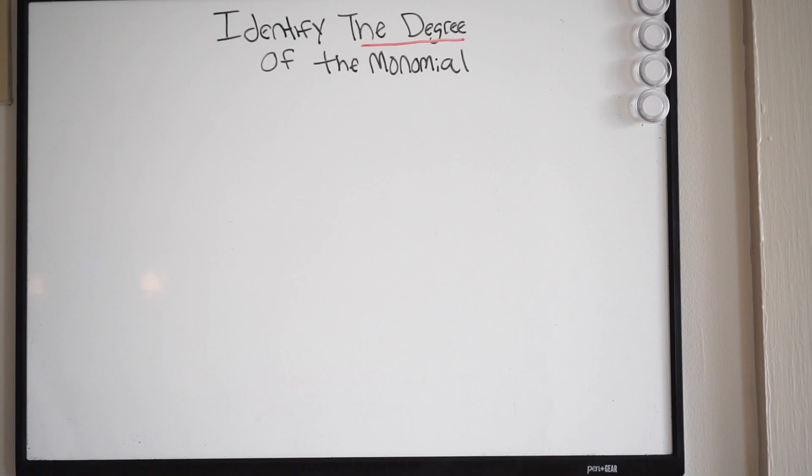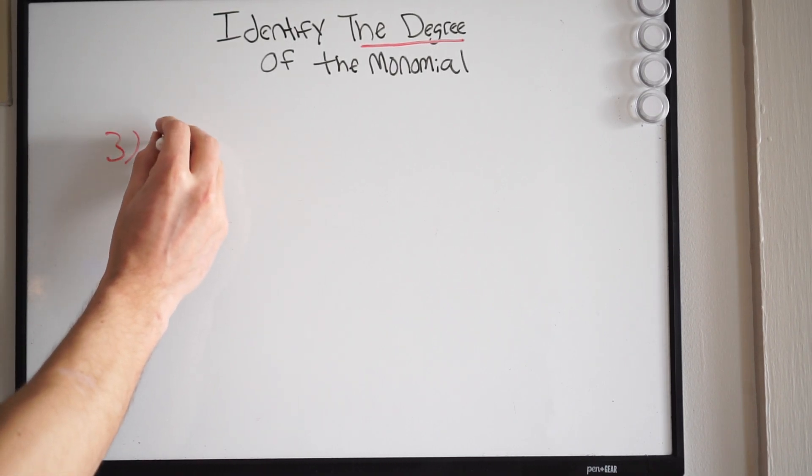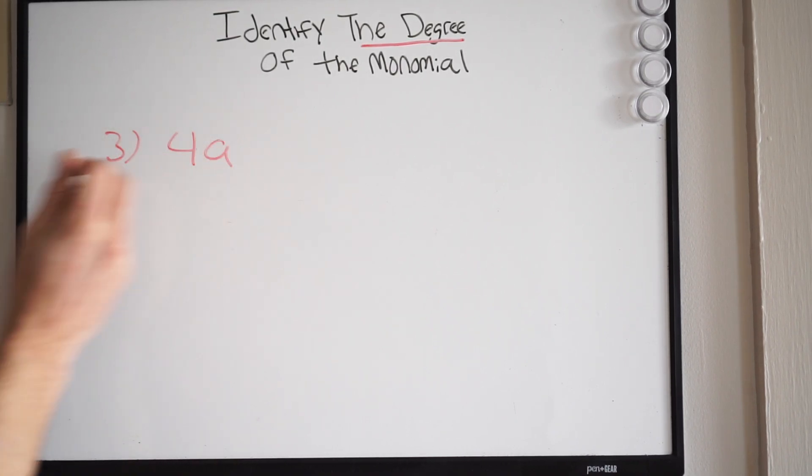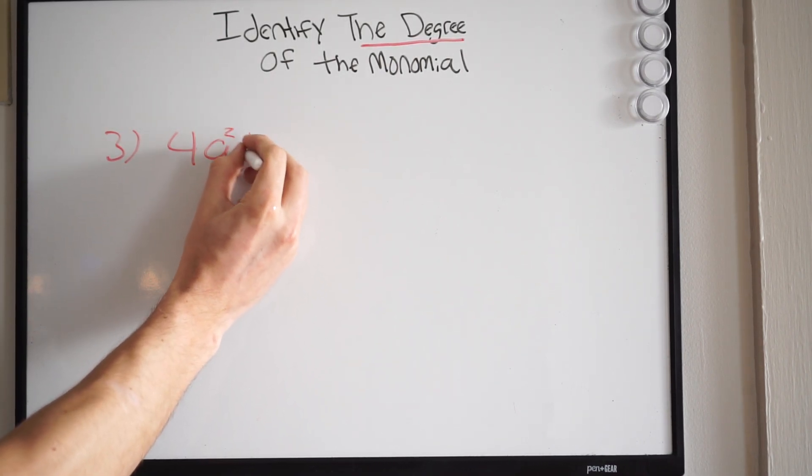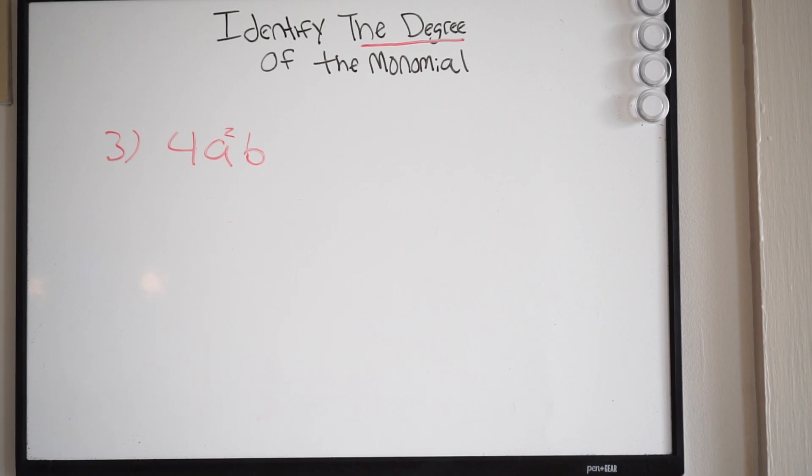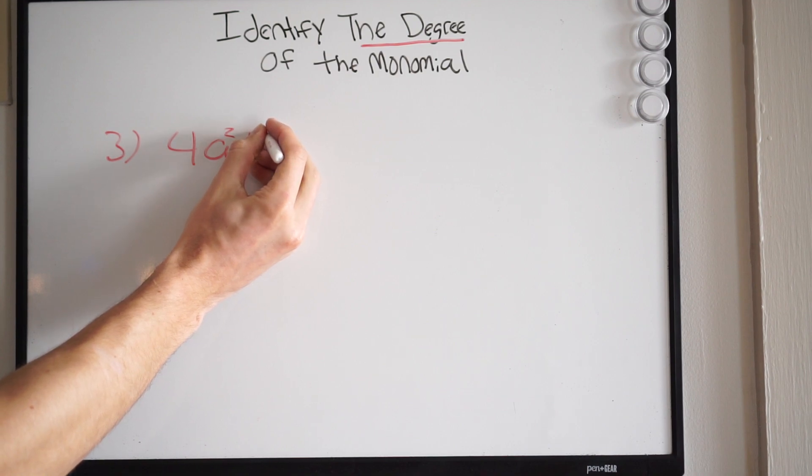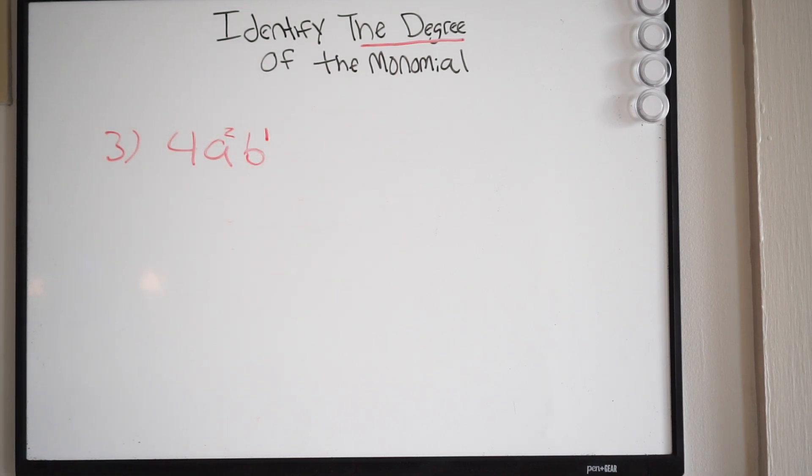So if I had, we have 4, a squared, and then b. Now remember, we're only looking at the exponents, right, on the variables. We know that we have an exponent of 2 here. We have an exponent of 1, right, on this b. Well, what do you think the degree is going to be here?